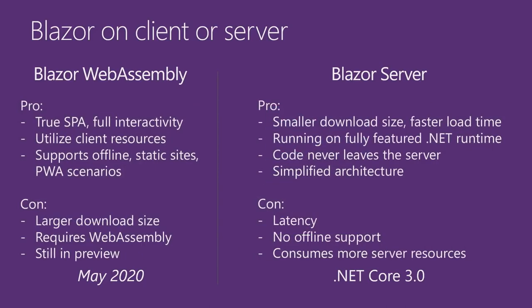How do you pick between these two different hosting models? There are different pros and cons to each. A Blazor WebAssembly app is truly a single-page app — it has full interactivity, runs client-side on the user's device. You can use all of that device's resources like CPU, memory, and storage to the extent the browser will let you. It supports offline scenarios, you can deploy it as a static site without needing .NET on the server, and you can build progressive web apps. The downside is you need to download the runtime with your app, adding download size cost — your app may load slower. It requires that the browser supports WebAssembly, so something like IE 11 won't work. Also, Blazor WebAssembly is still in preview and not ready for production yet.